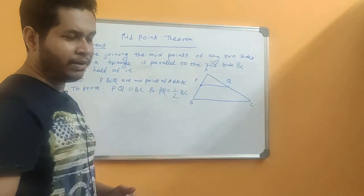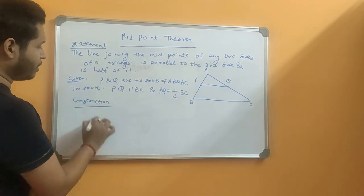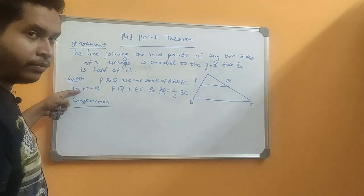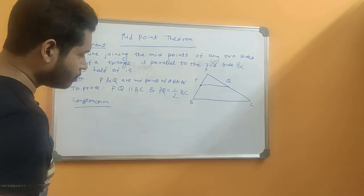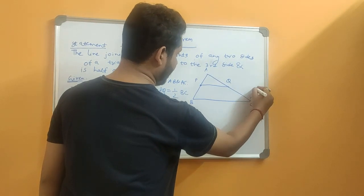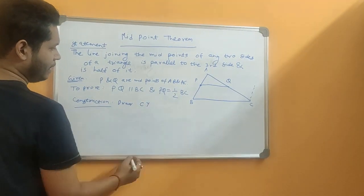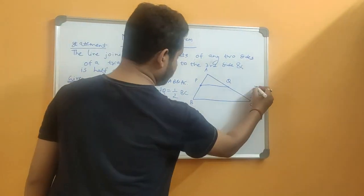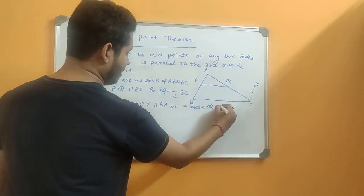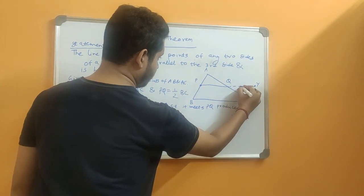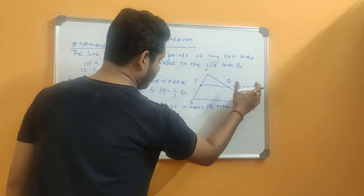Now to prove this theorem, we will need a small construction. So I am writing construction. This should be the proper way of always writing a proof: first the statement, then what is given, then what we want to prove, then construction if required, and after that the main proof. Our construction is: draw a line CY parallel to BA, and extend PQ to meet CY at point Y — that is, PQ produced meets CY at Y. You can see that these two are meeting at Y. So now the construction is complete.